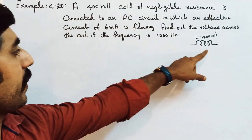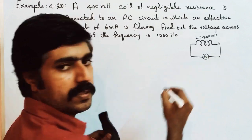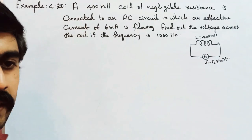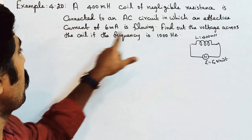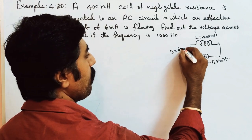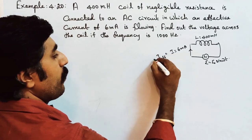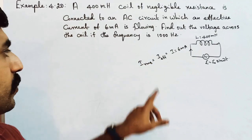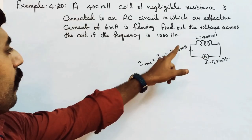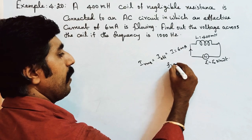Connected to an AC circuit, so this is AC. The formula is V equals V naught sin omega t. In which an effective current of 6 milliampere is flowing. So the flow could be a current, 6 milliampere. I mean effective current, I effective or I RMS. The root mean square I RMS, I effective, 6 milliampere. It is flowing. Find out the voltage across the coil if the frequency is 1000 hertz. Frequency value 1000 hertz is here.